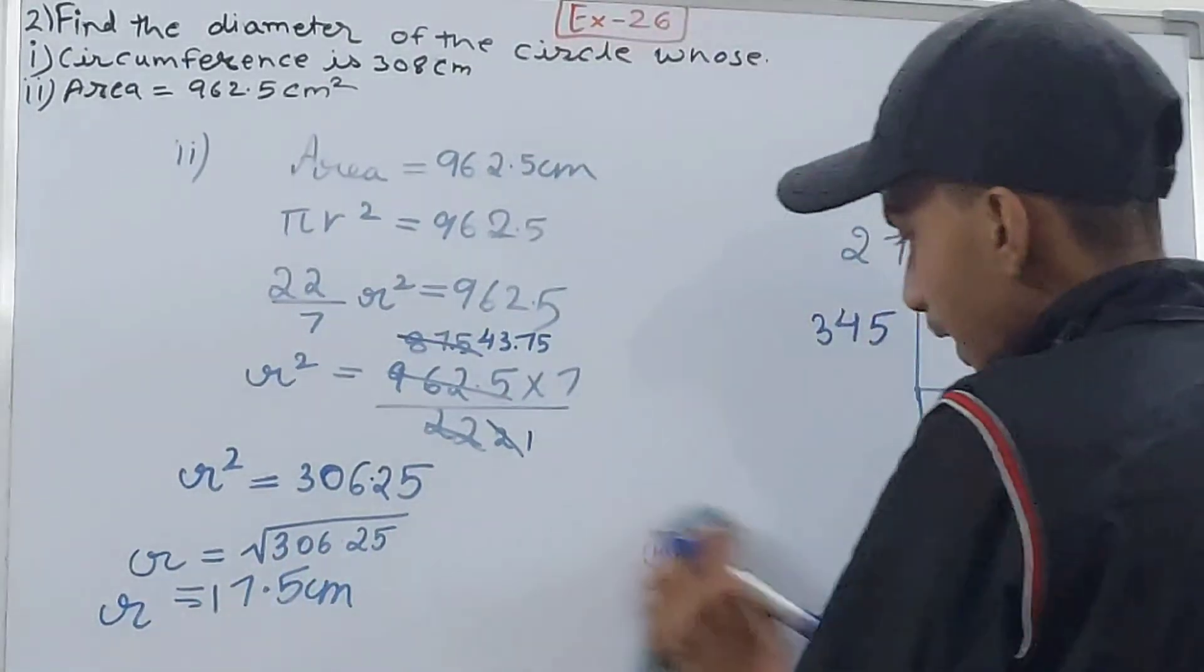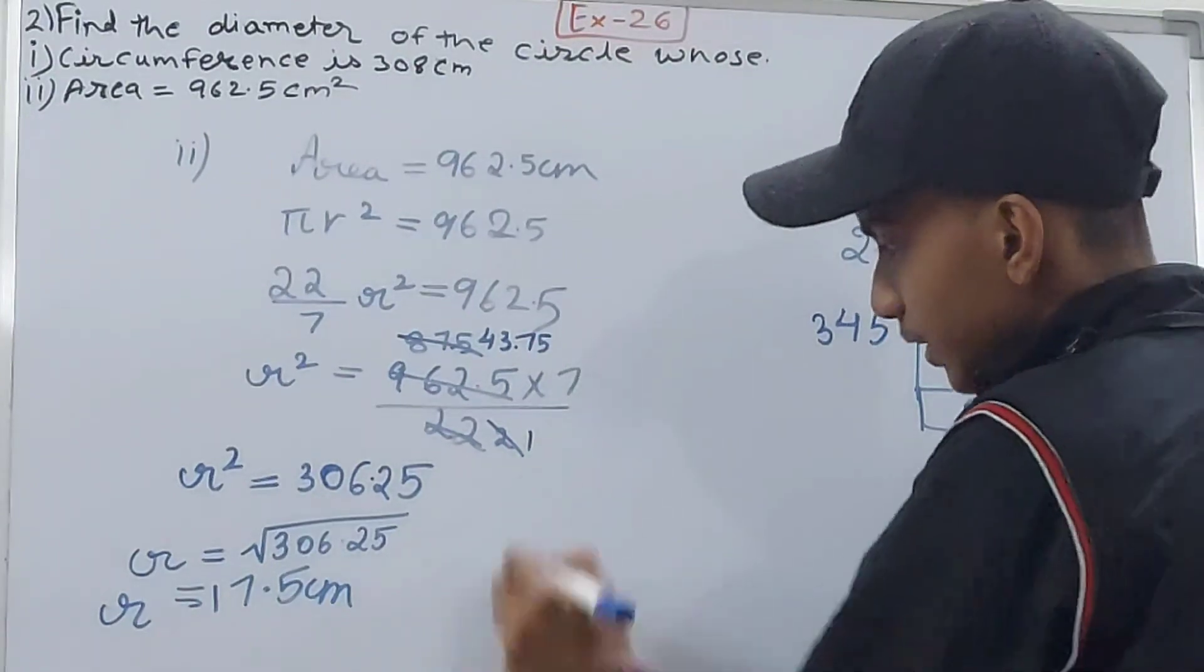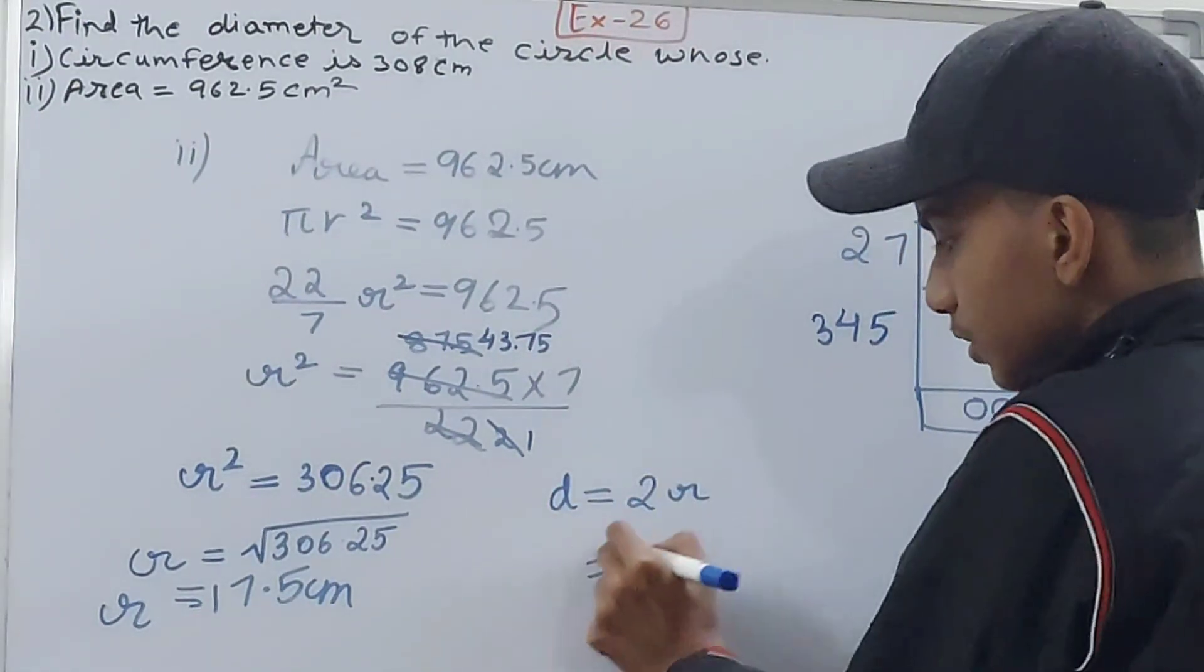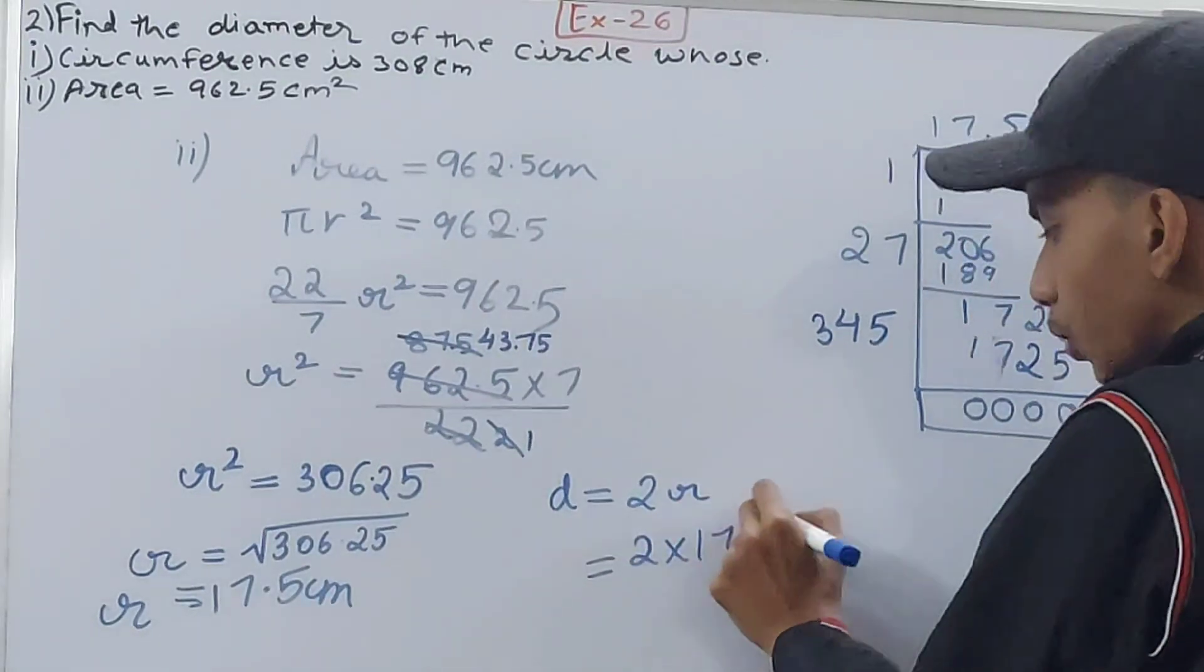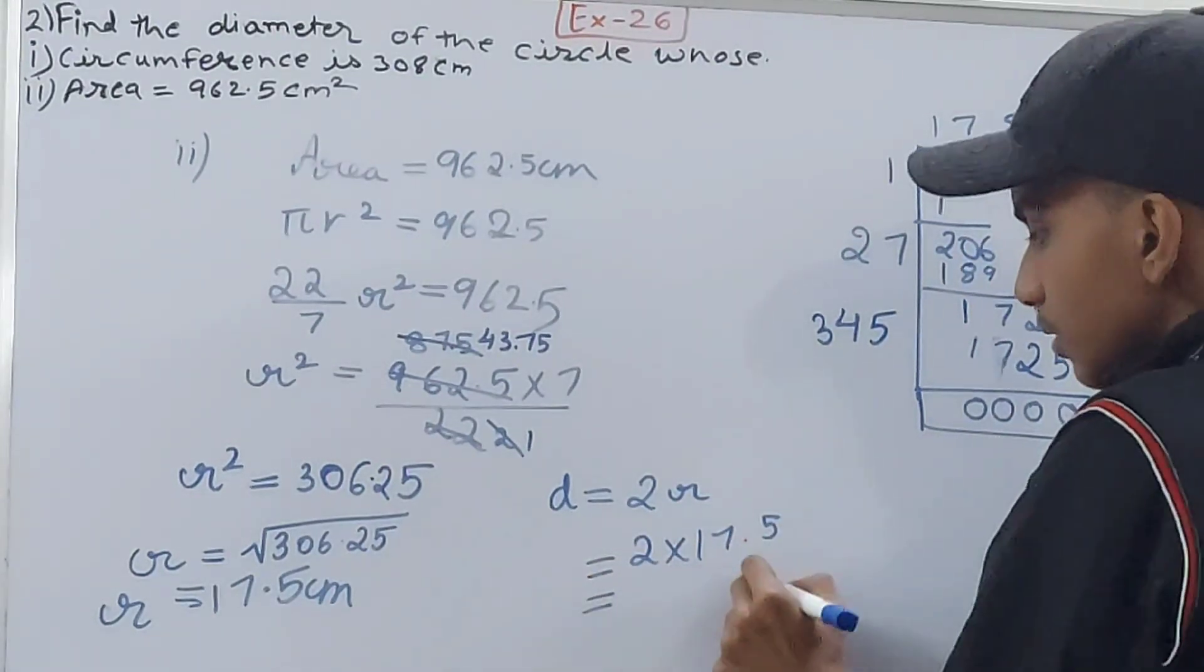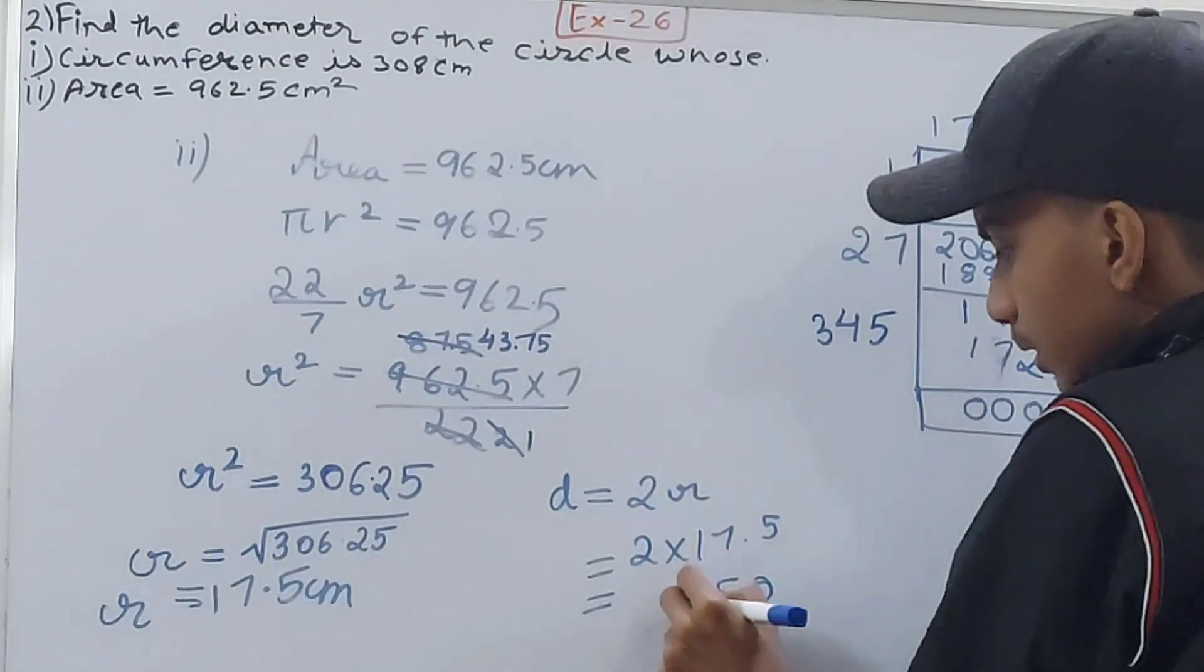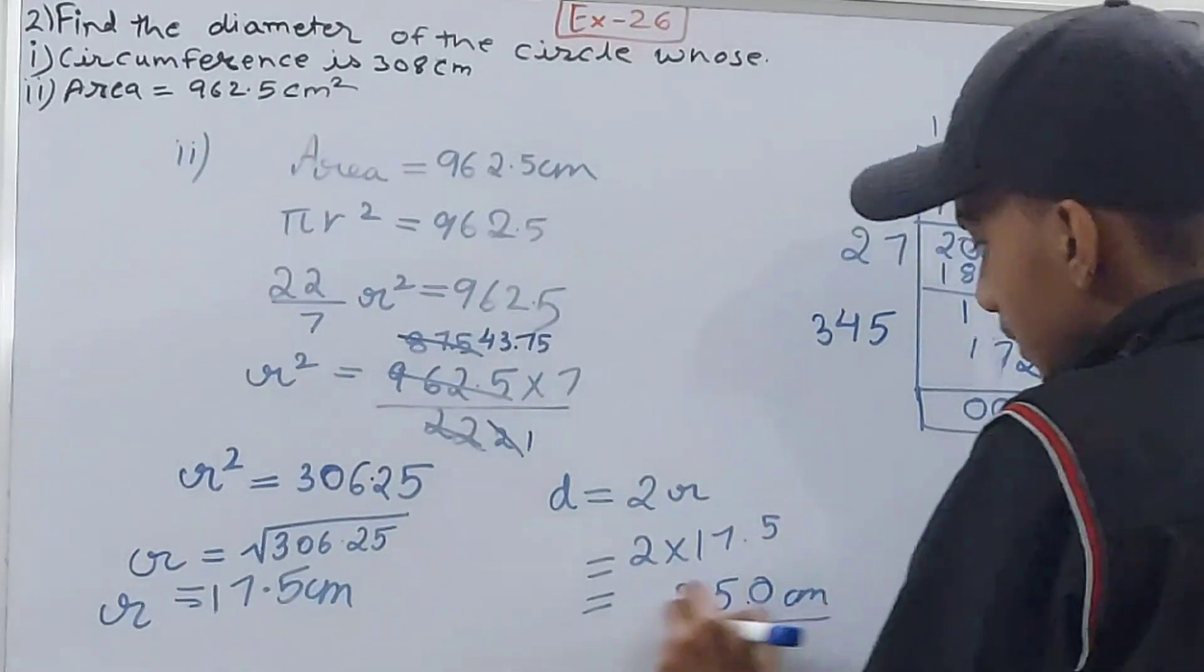So this is 2 × 17.5. That's 0, 1 carried over, 14 and 1 is 15, and 1 is 35 centimeters. That's your answer.